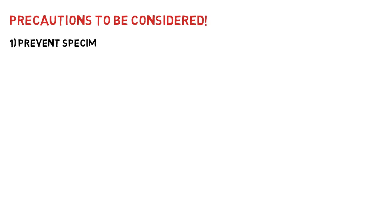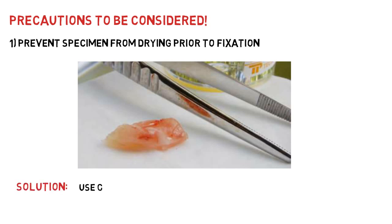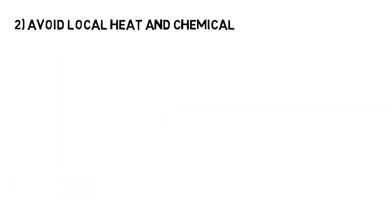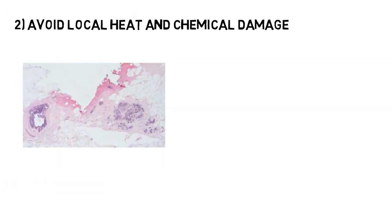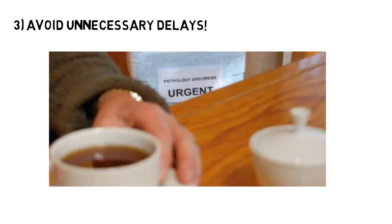Precautions to be considered at reception: Number one, prevent specimen drying prior to fixation — this can be avoided by placing the specimen on a gauze piece moistened with saline. Number two, avoid local heat and chemical damage to specimens prior to fixation. Number three, avoid unnecessary delays and transport it to the histopathology laboratory as soon as possible. Number four, handle the specimens gently.